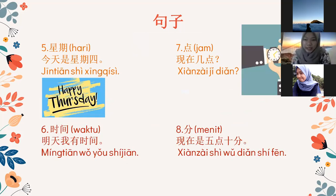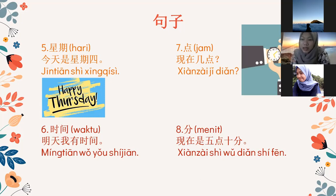星期 (xing qi) artinya hari. Contoh kalimatnya: jing tian si xing qi si — hari ini adalah hari Kamis. Nama-nama hari ada tujuh ya, satu minggu ada tujuh hari. Mulai yang pertama: hari Senin yaitu xing qi yi; hari Selasa xing qi er; hari Rabu xing qi san; hari Kamis xing qi si; hari Jumat xing qi wu; hari Sabtu xing qi liu; untuk Minggu yaitu xing qi ri.